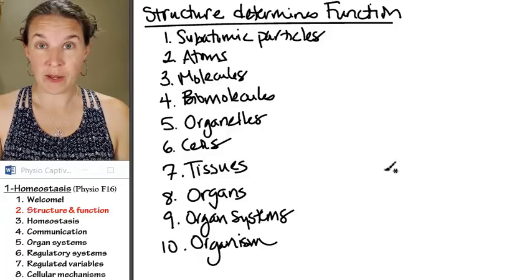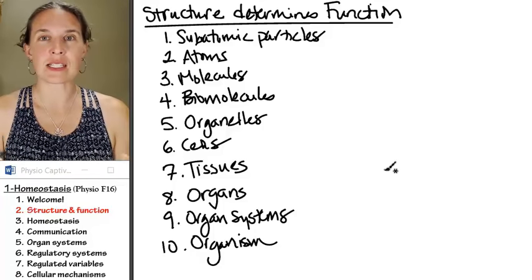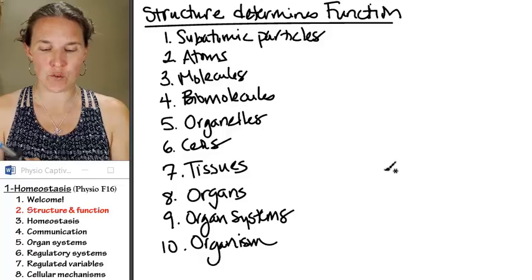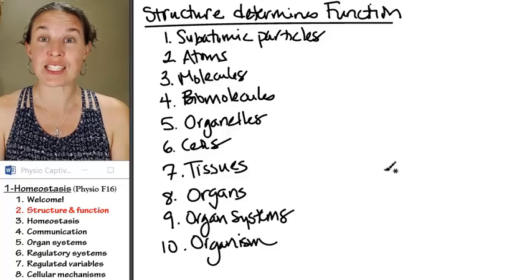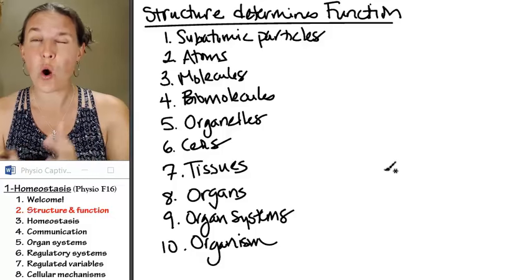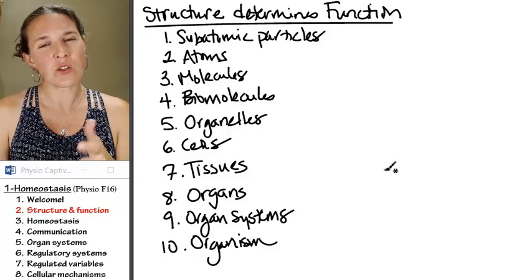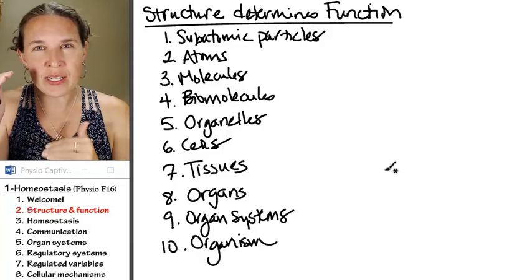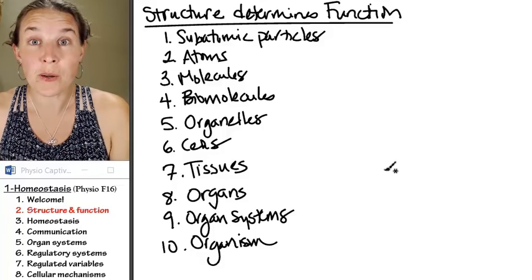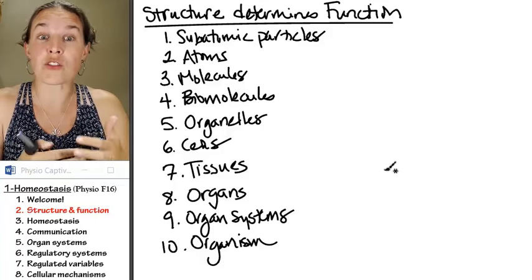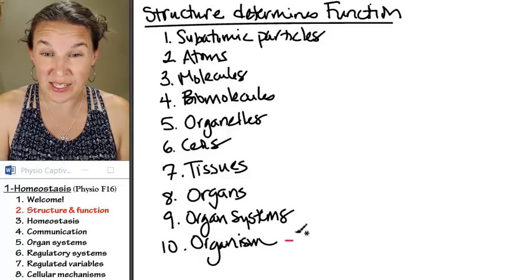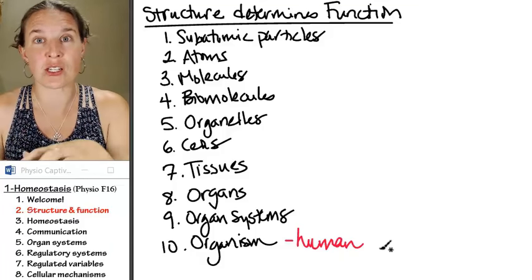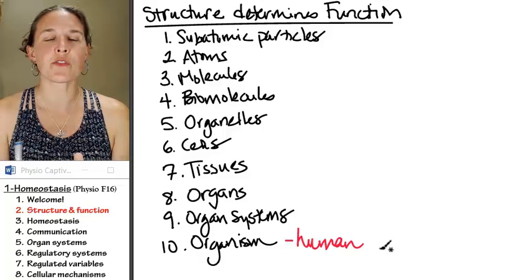One of the characteristics of life is that living systems exhibit this hierarchical organization. This is something you've seen in general biology and in anatomy, so this is totally review. But I want to give you a physiological context. This hierarchical organization represents the structure of a living system — or a human in this case — that will ultimately determine the function of that human. So let's just briefly review this stuff.